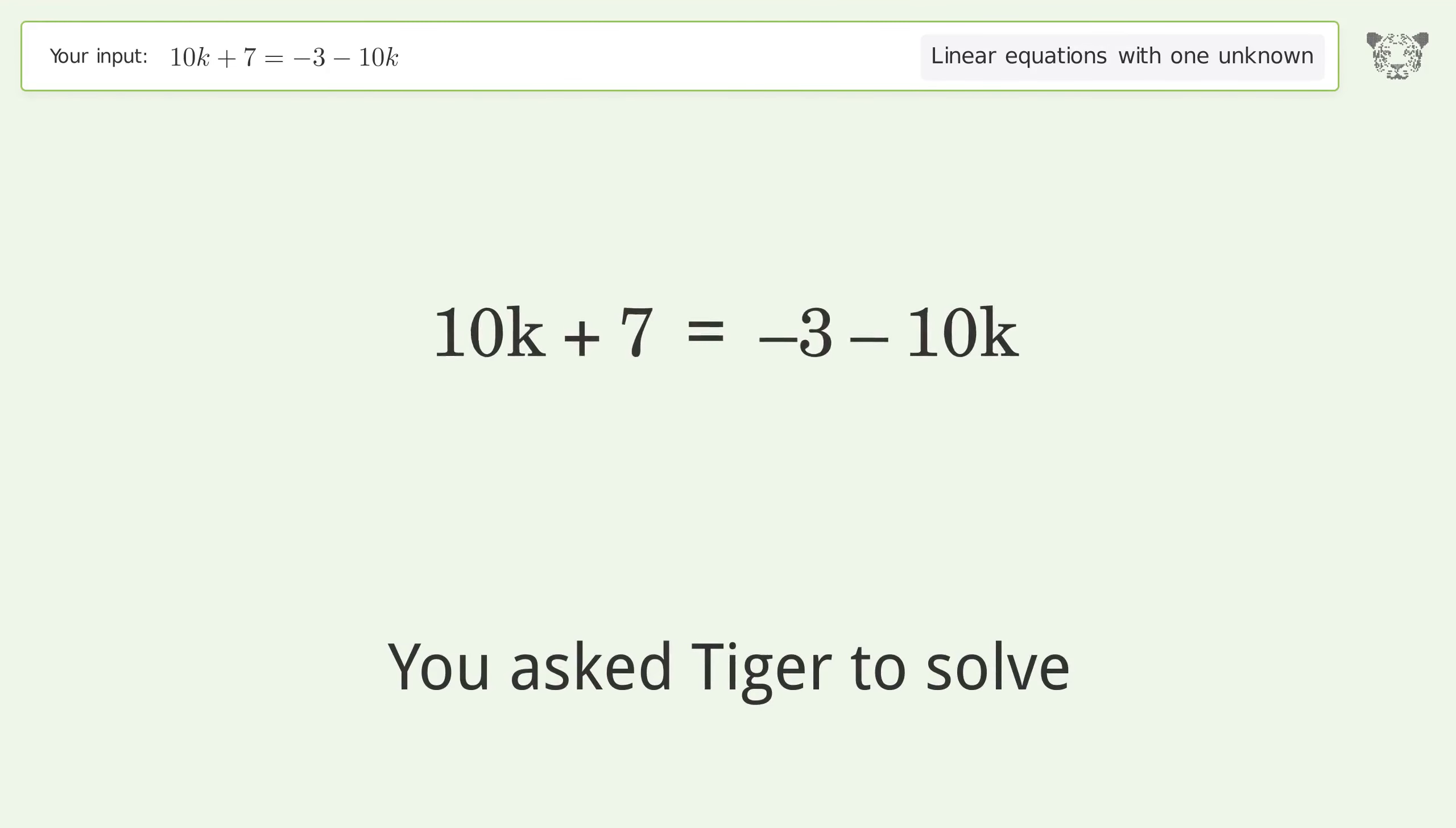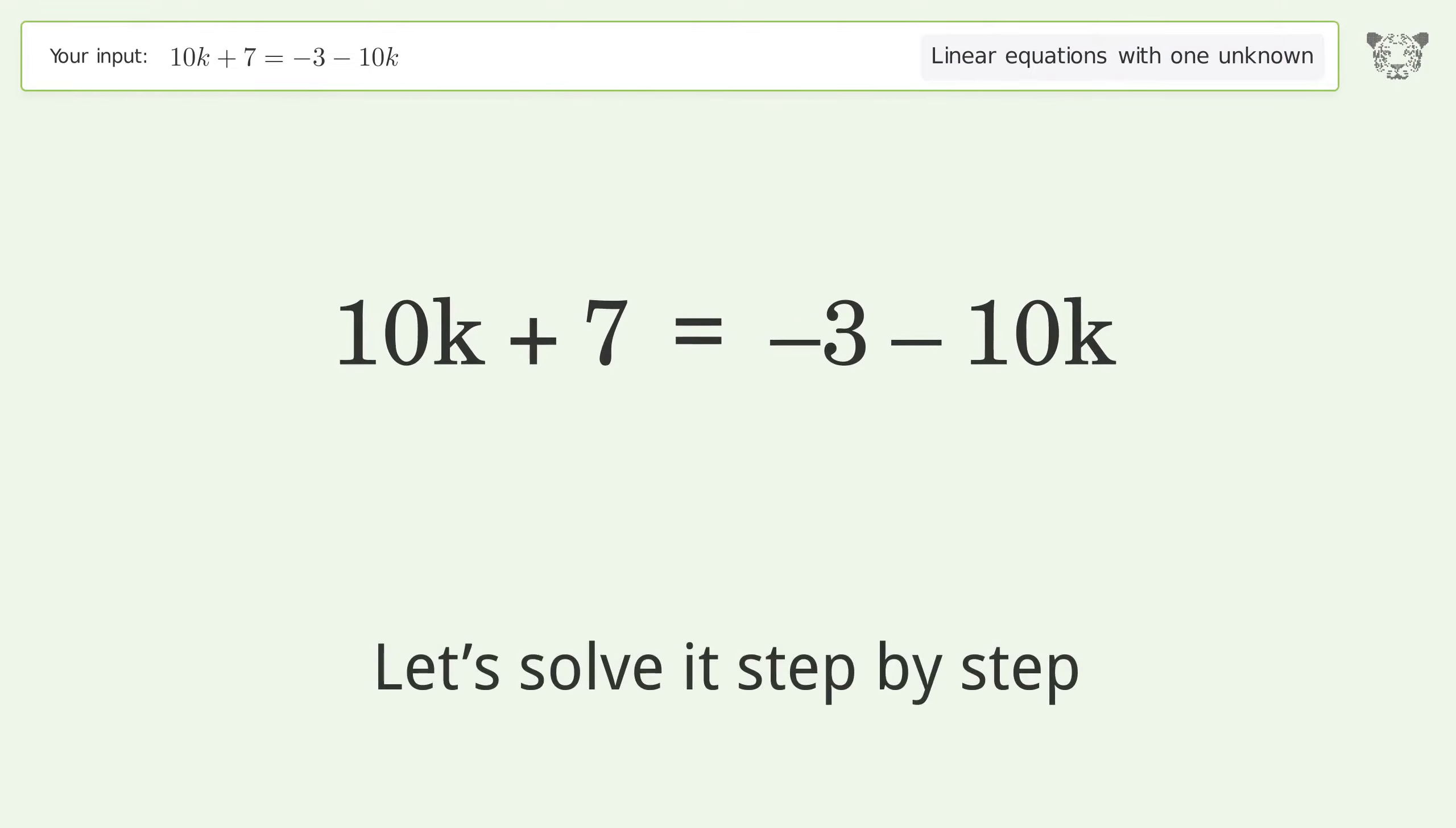You asked Tiger to solve this linear equation with one unknown. The final result is k equals negative one-half. Let's solve it step by step.